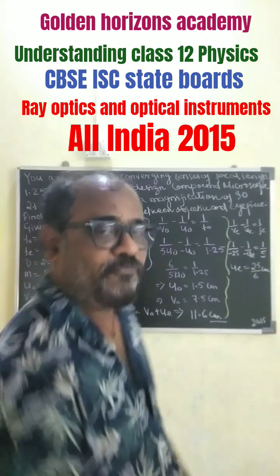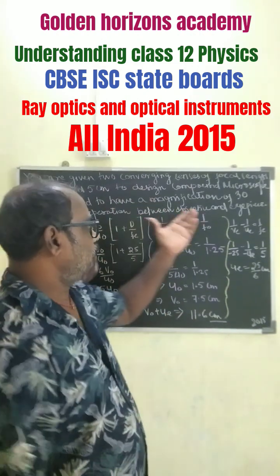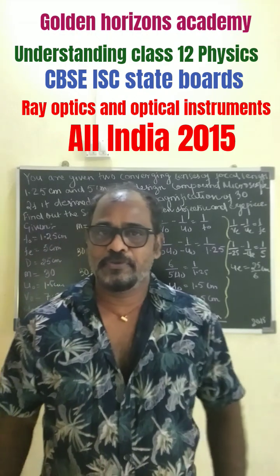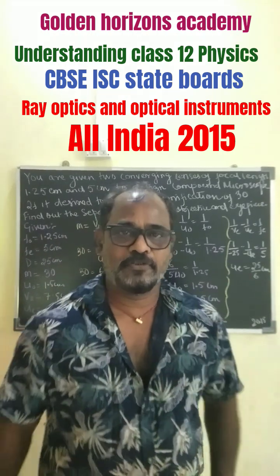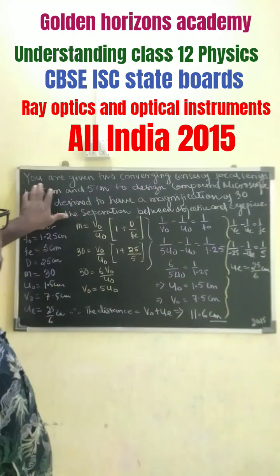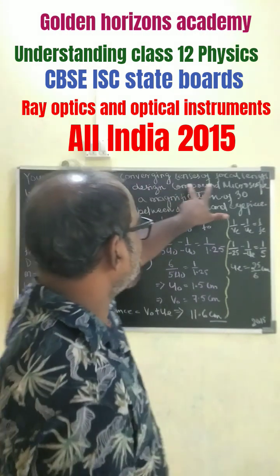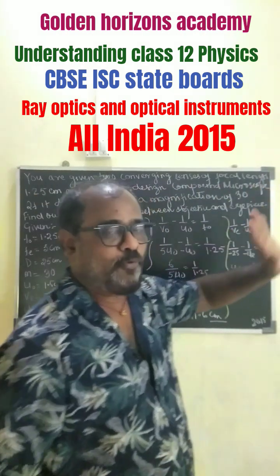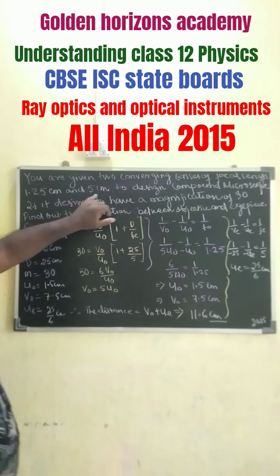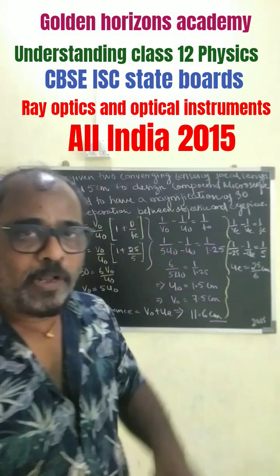Hello, I am Arun Vishwas. I have brought you a 2015 question of all India's CBSE and ICSE. Here the question is given: you are given two converging lenses of focal length 1.25 cm and 5 cm to design a compound microscope.